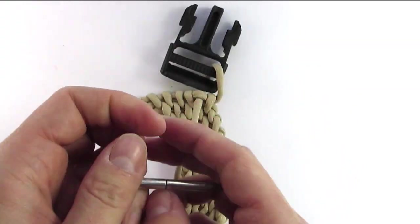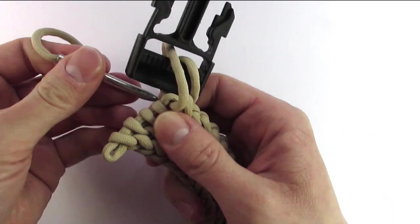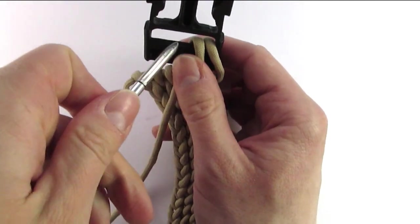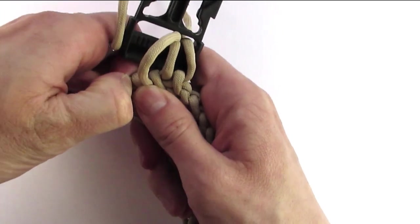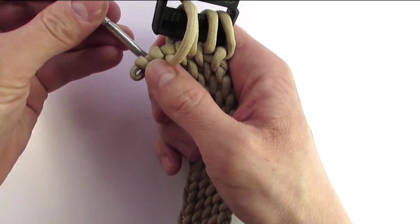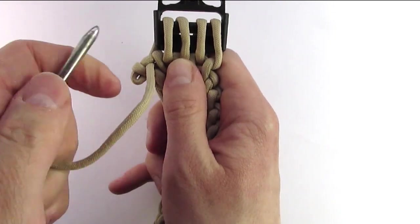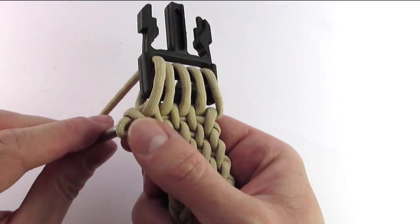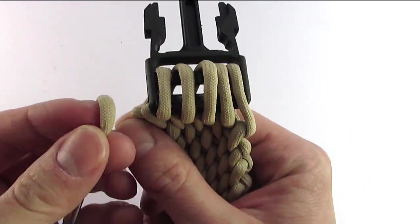I'm going to basically wrap the buckle and I'm going to pass through the parts where the loop would be in our previous sections. So basically I'm pulling this cord through the loops that we would make. Finally, we're going to go through the last loop and at this point you can re-tighten these loops that we attached the buckle with and make a half hitch.